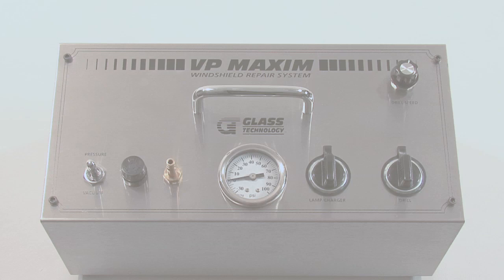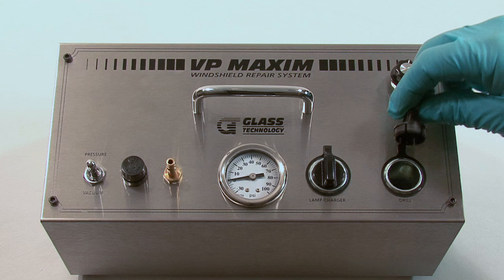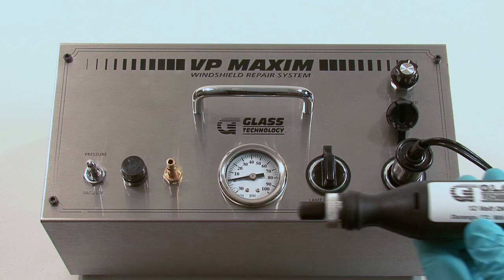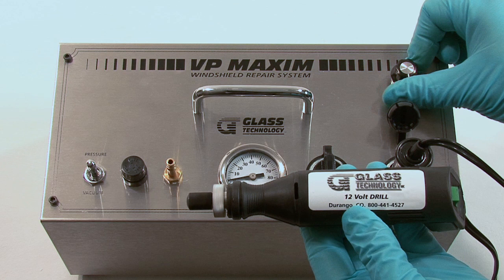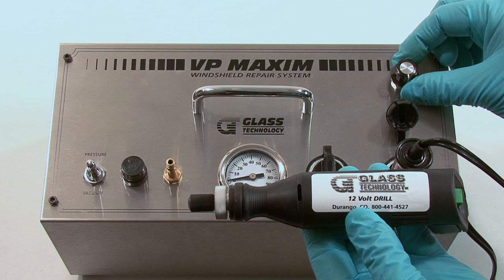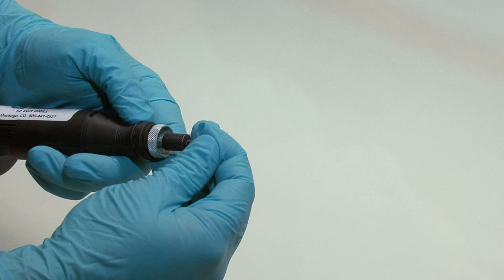Next, plug the 12-volt drill into the Maxim Machine drill receptacle and adjust the speed to your preference on the Maxim Machine. Note a higher speed will diminish the life of the bit. Equip the 12-volt power drill with a glass cutting bit and drill out the center of the impact point approximately 2 millimeters. It is not always necessary to drill out the center of a brake.